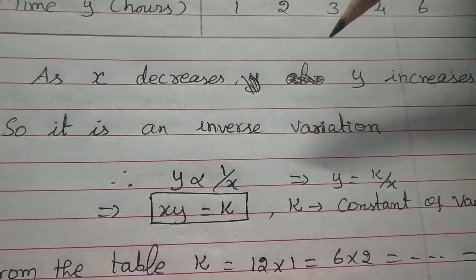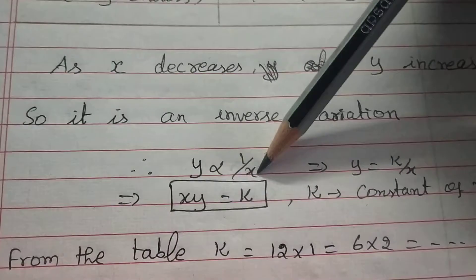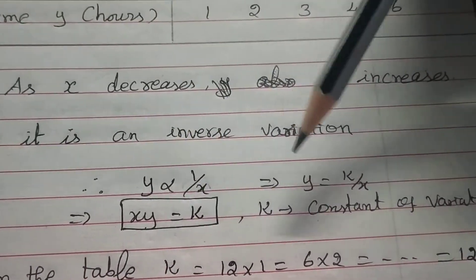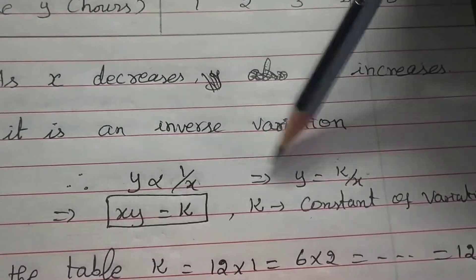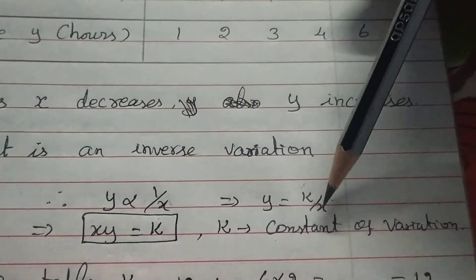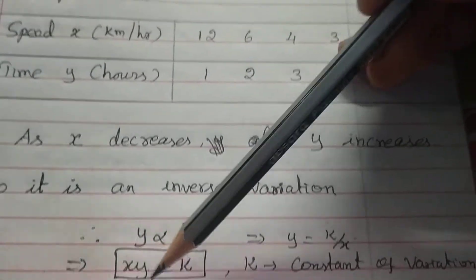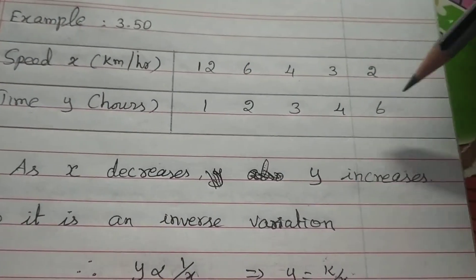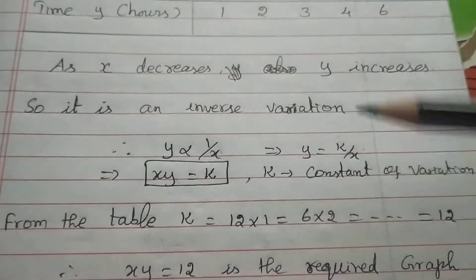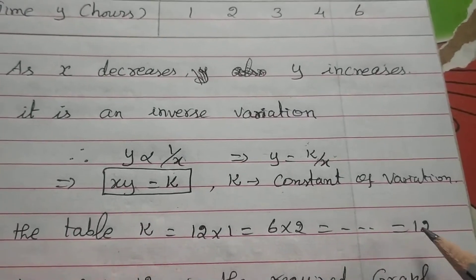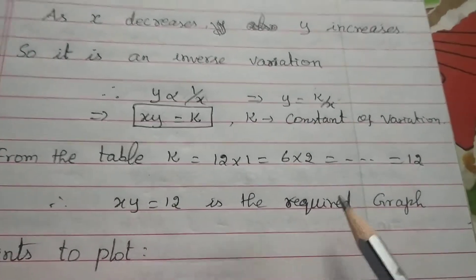In the last video we have seen inverse variation: if y is proportional to 1 by x, then y equals k by x, which means xy equals k, where k is the constant of variation. Here, xy equals 12 in every case. So k equals 12. Therefore, xy equals 12 is the required graph equation.